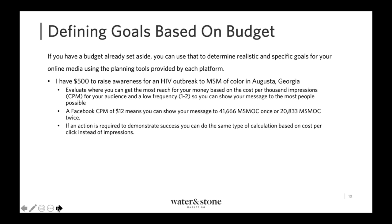Different channels will sell media a couple of ways. One main way is based on CPM — cost per thousand impressions. Don't ask me why in the media space 'M' equals a thousand instead of a million; it goes back to when the Romans were doing advertising. If they have a cost per thousand impressions of $12, with a $500 budget you can show your message to 41,666 MSM of color once, or to 20,833 MSM of color twice. If maximizing awareness is your goal, keep your frequency lower. If an action is required, some channels will sell you a click — for instance, Facebook might charge $0.30 per click.